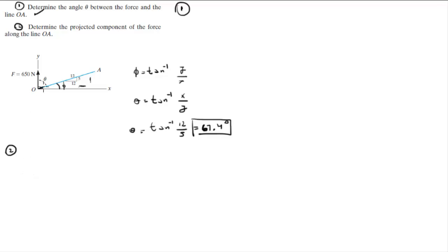So the first thing you need to find is the unit vector going along OA. So the unit vector going along OA is equal to 12 over 13 in the i direction plus 5 over 13 in the j direction. 12 over 13 going that way and 5 over 13 going that way.